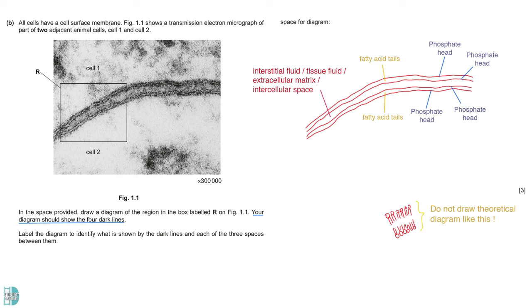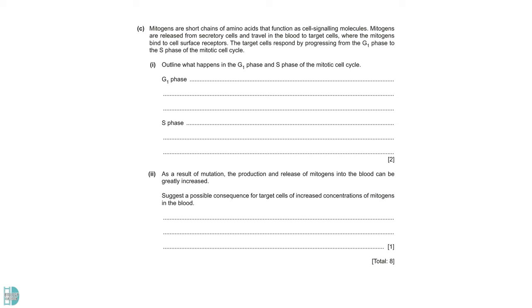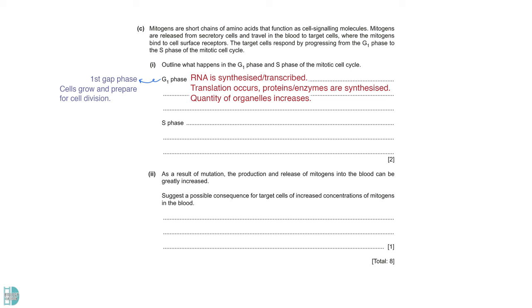C gives us some information about mitogens. They are the cell signaling molecules that cause cells to progress from the G1 phase to the S phase of mitotic cell cycle. Outline what happens in the G1 and S phases of the mitotic cell cycle. G1 is the first gap phase. This is when cells grow and prepare for cell division to take place. RNA will be synthesized in the process of transcription. Then, translation takes place to synthesize proteins including enzymes. The quantity of organelles will increase in the cell. There will be an increase in the volume of cytoplasm. You can also say that cell growth occurs. A checkpoint must be passed for the cell to proceed with its division.